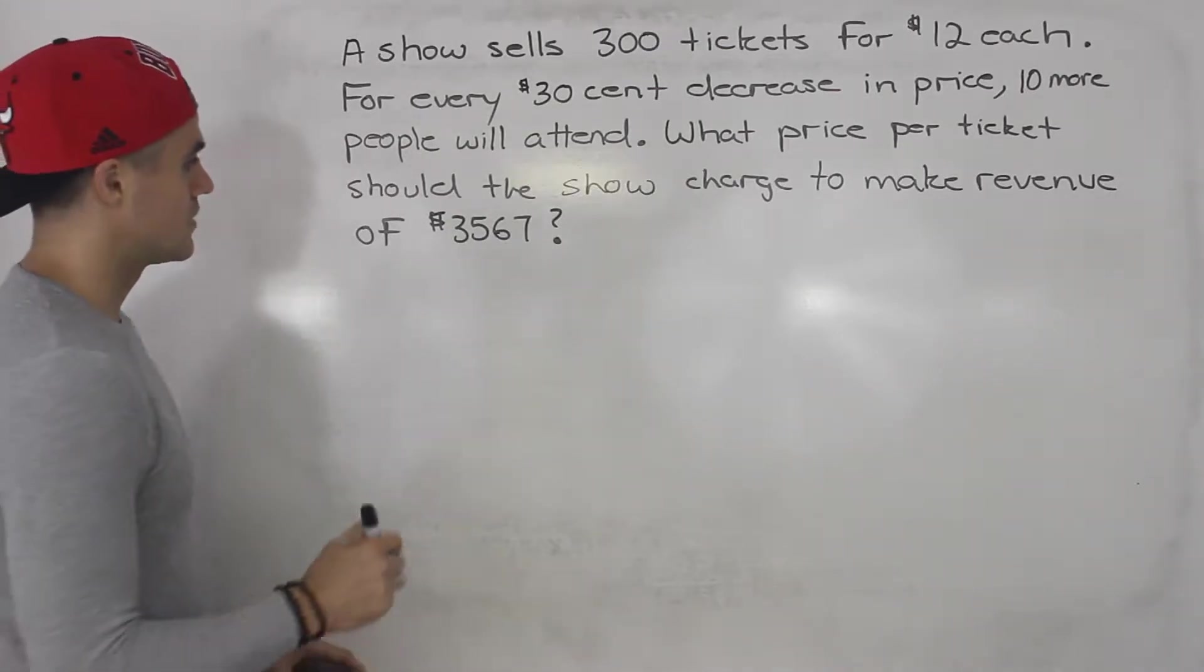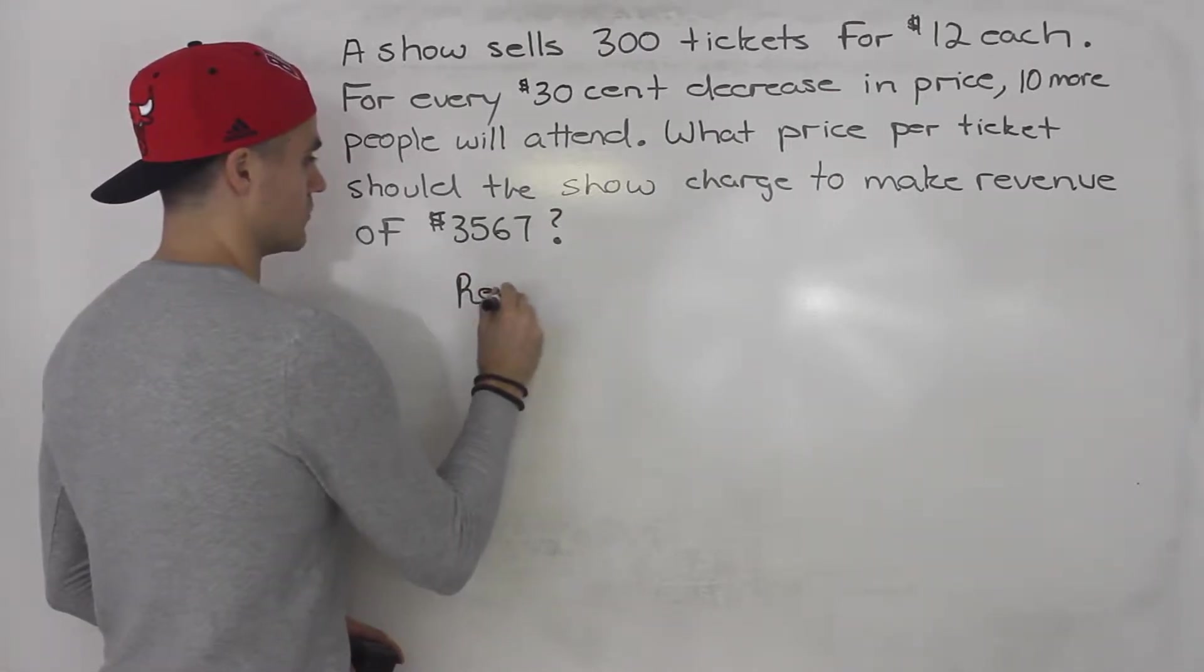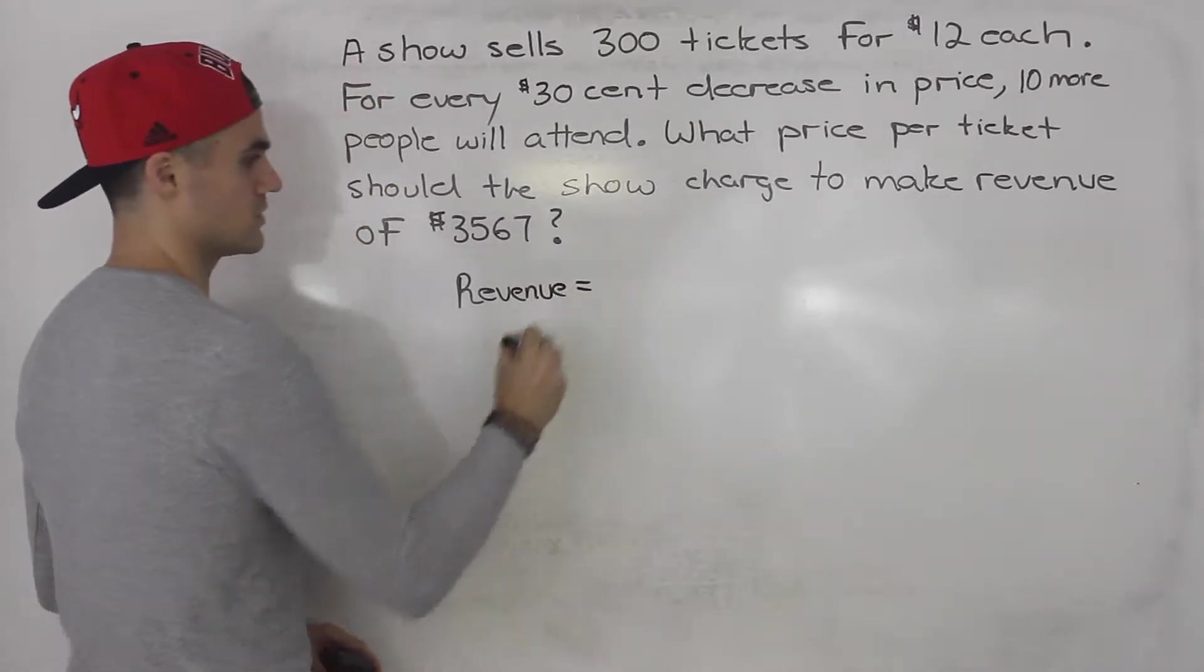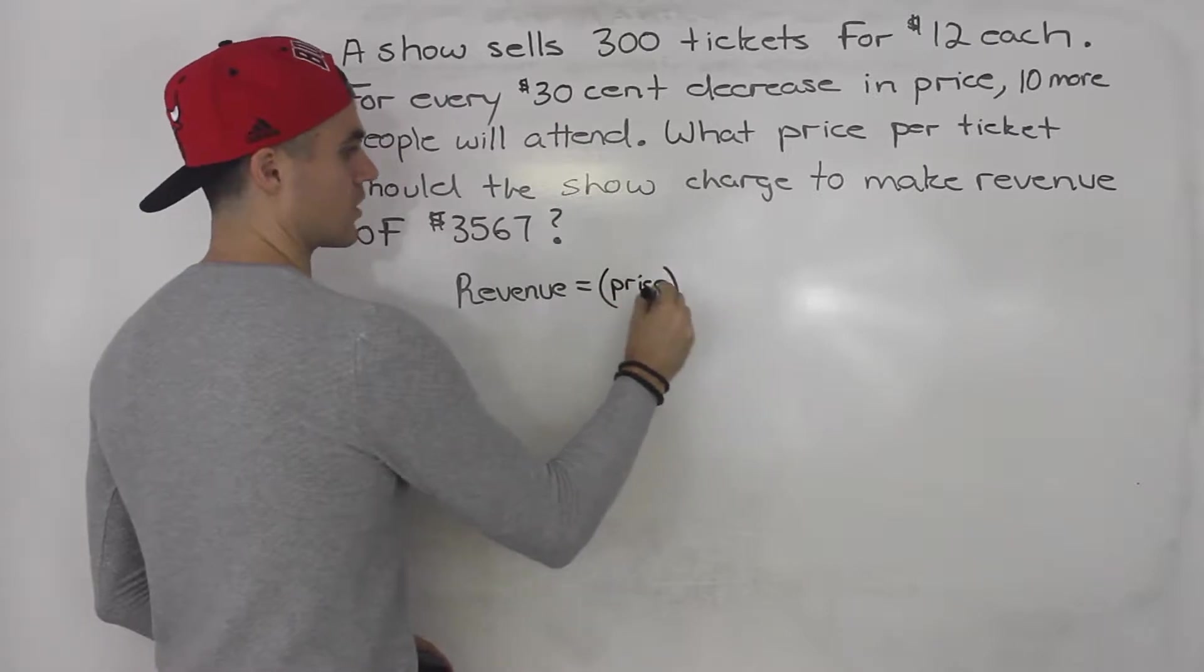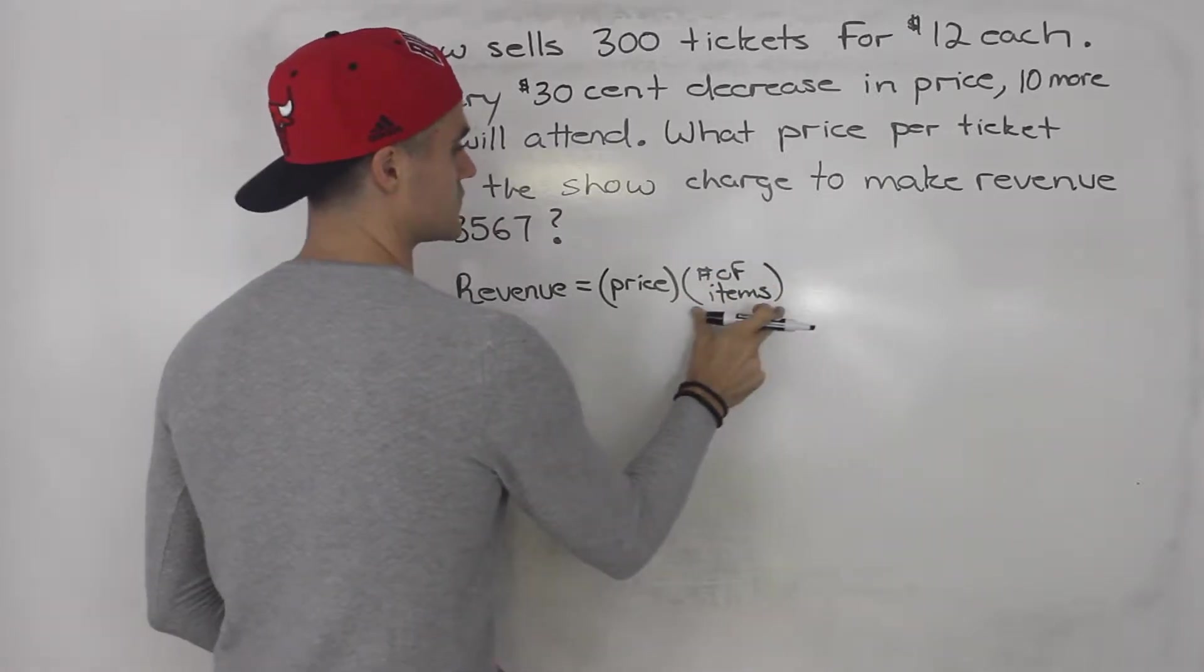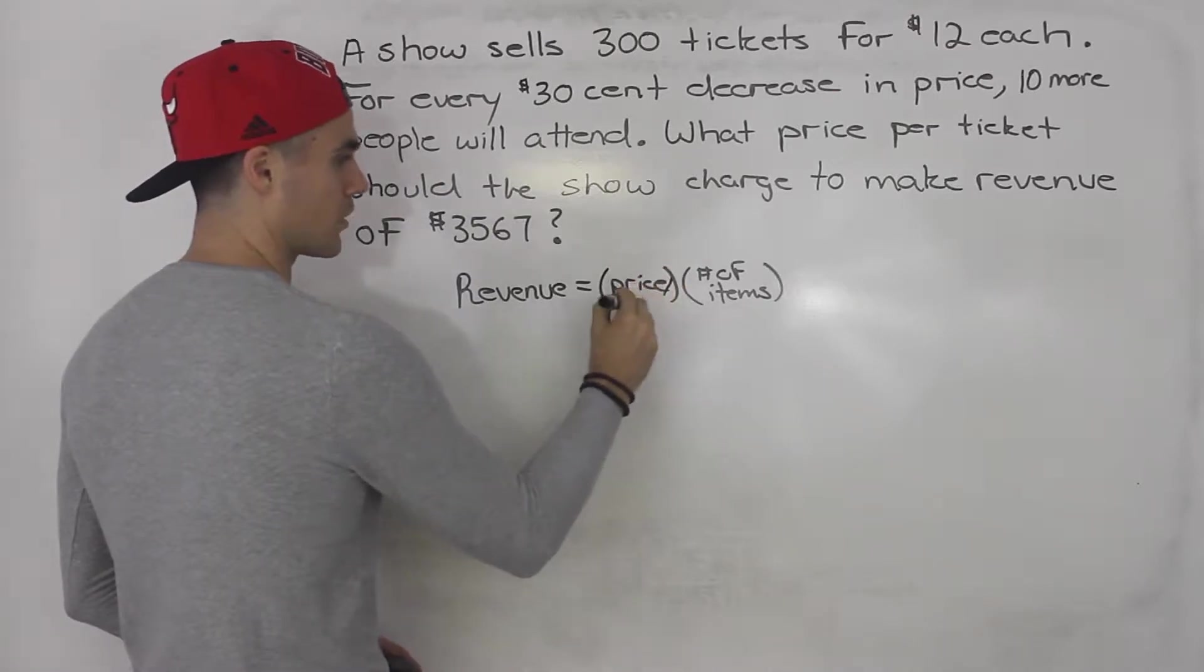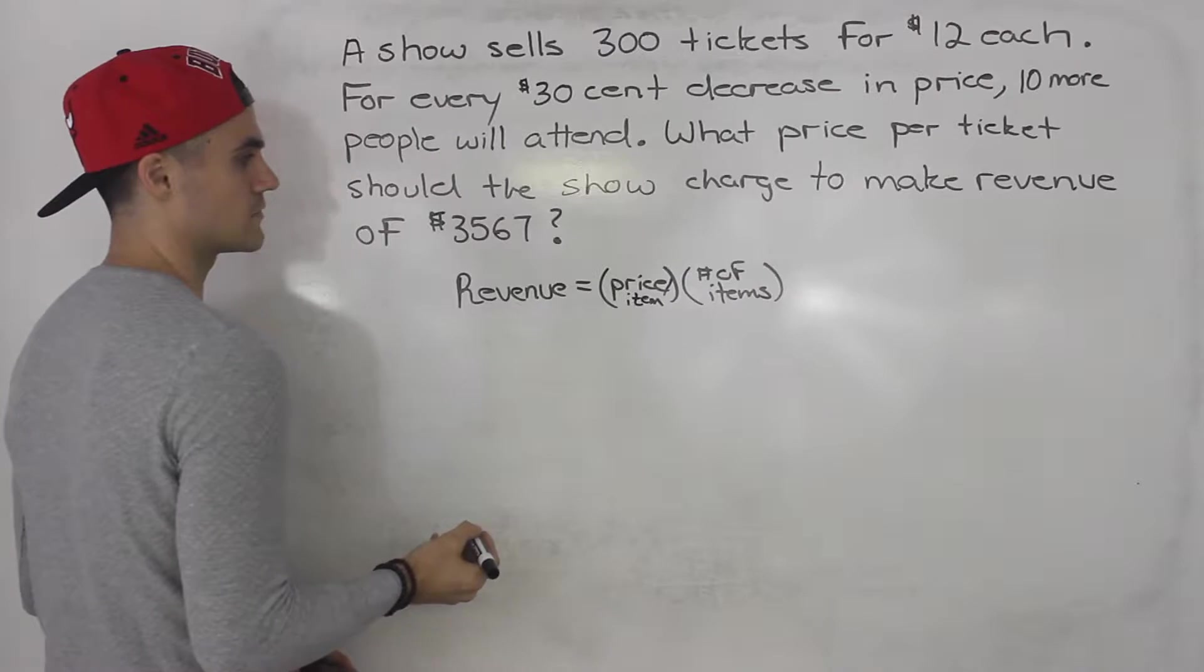So this type of question, we have to make a revenue function. And we know revenue is equal to what? Price per item times the number of items. In this case, we're dealing with tickets, so the number of tickets. But this is the general formula: price per item times number of items.